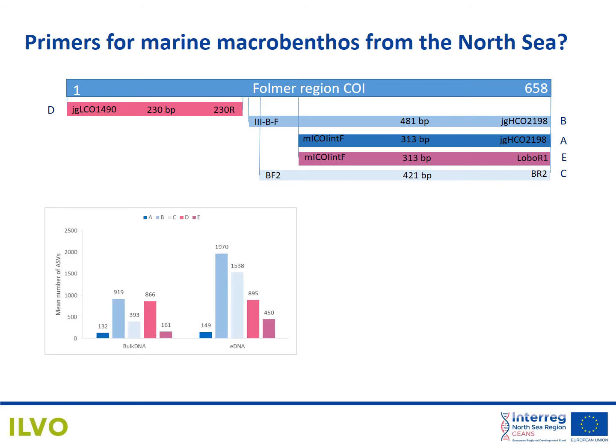In this graph, each primer set is represented by a colored bar and the mean number of amplicon sequence variants observed per sample is shown along the y-axis. The number of ASVs differed substantially between primer sets, with primer set A shown in dark blue clearly having much lower genetic diversity than the other four primer sets. What is also clear from this graph is that all five primer sets were getting more ASVs in the eDNA from the ethanol preservative than in the bulk DNA. But this is genetic diversity — so how does this translate into species diversity?